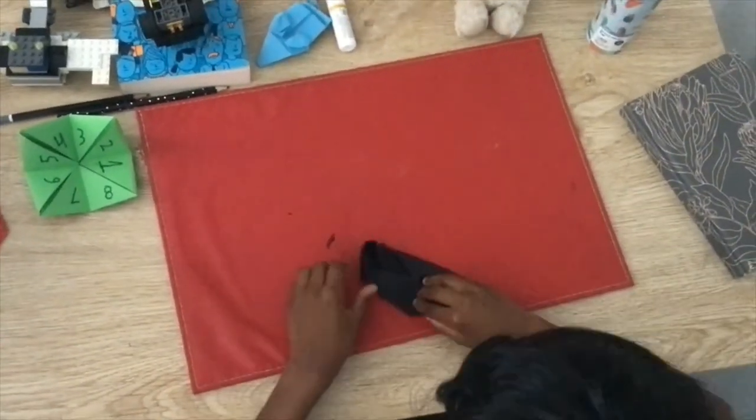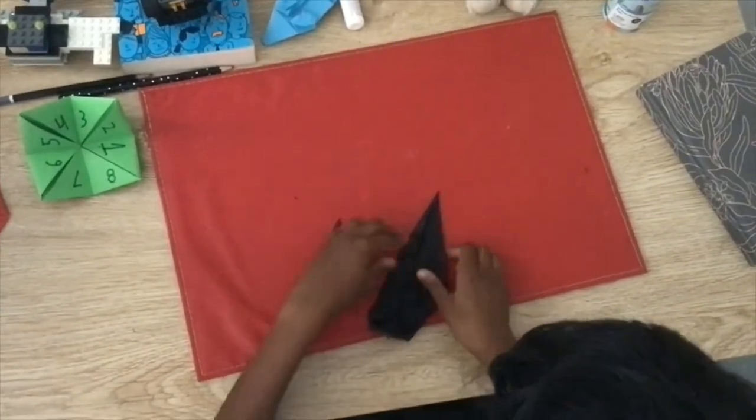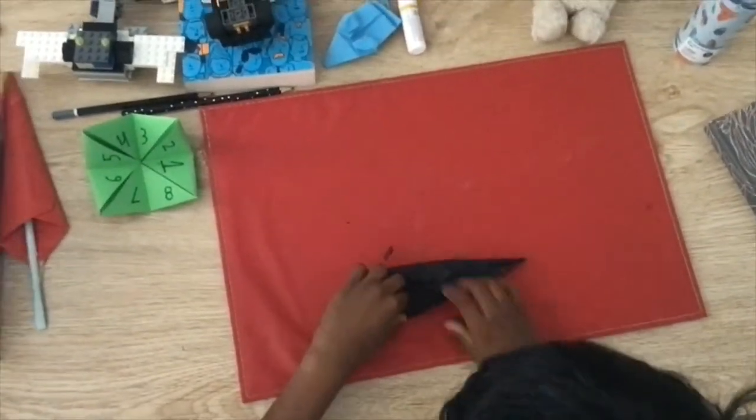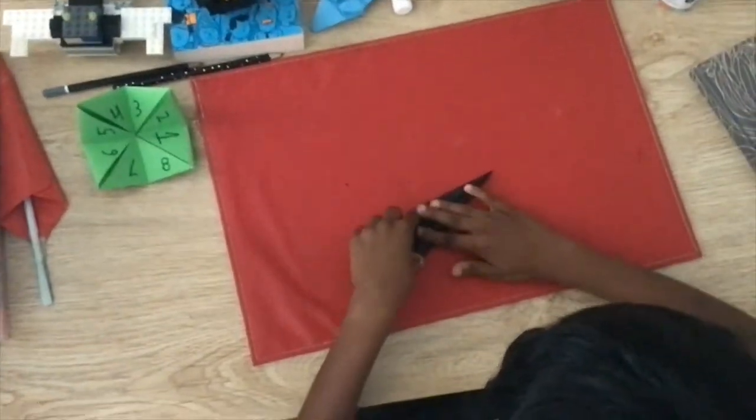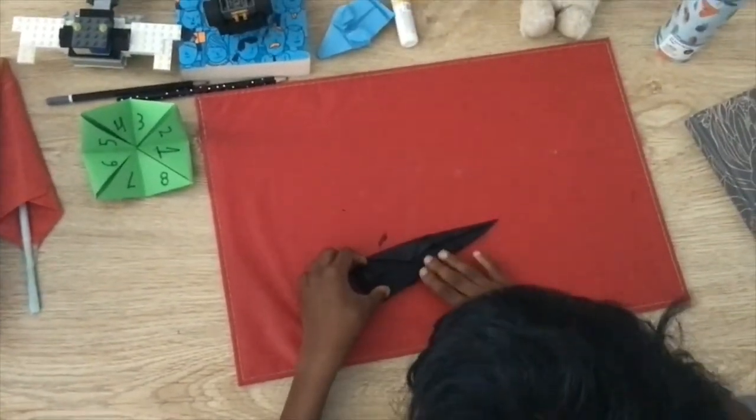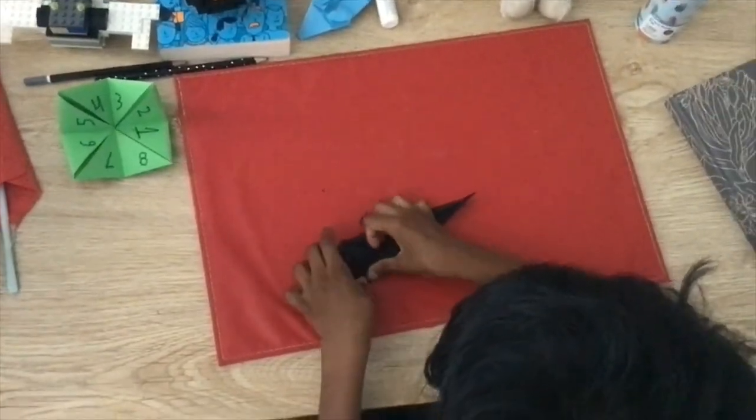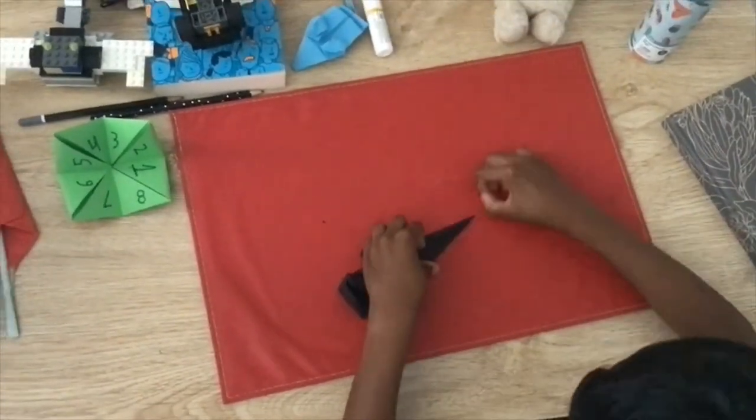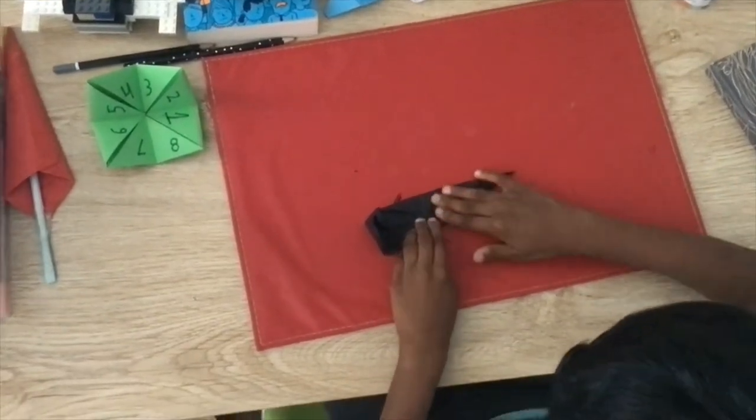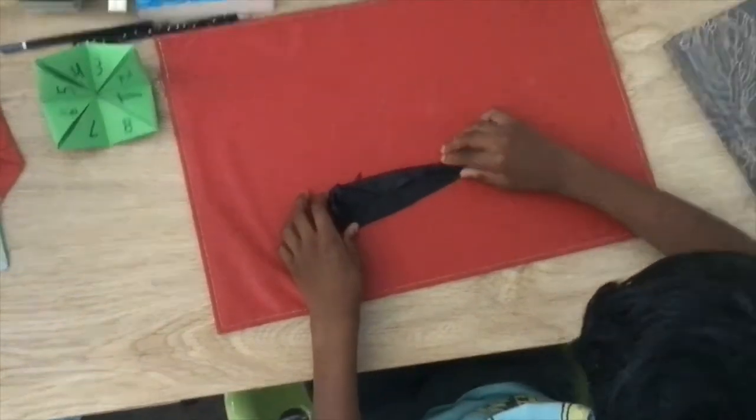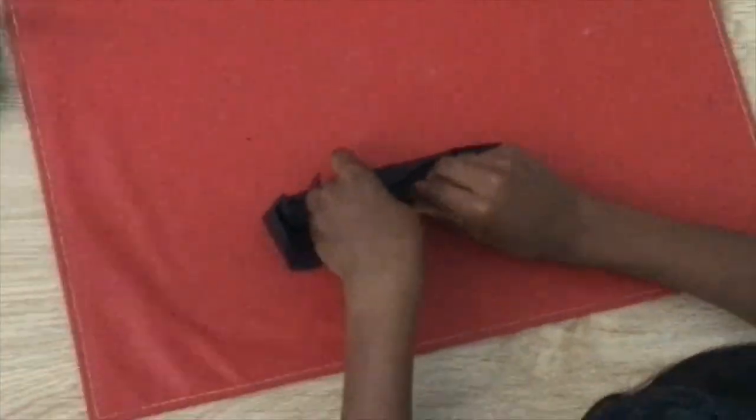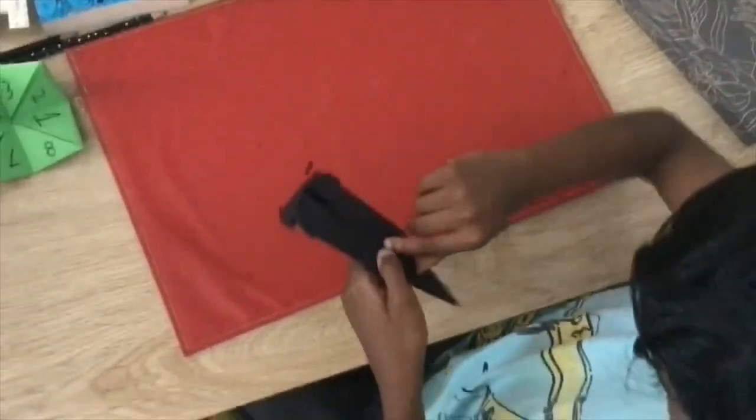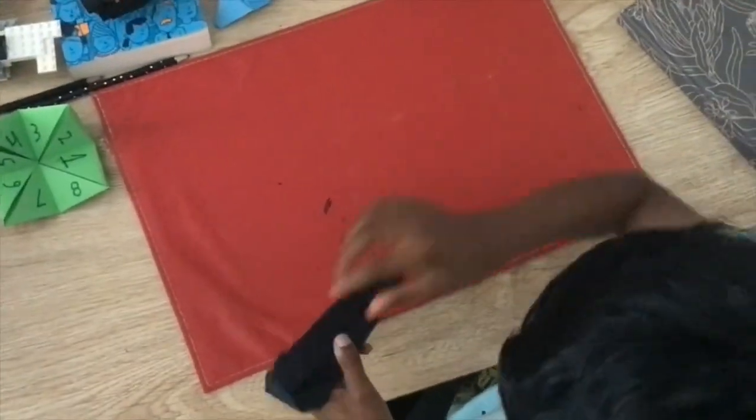Now we're going to do the same thing on the side. Okay, so now it looks like this. Now as we see like a flap here, it's like this, and this here.